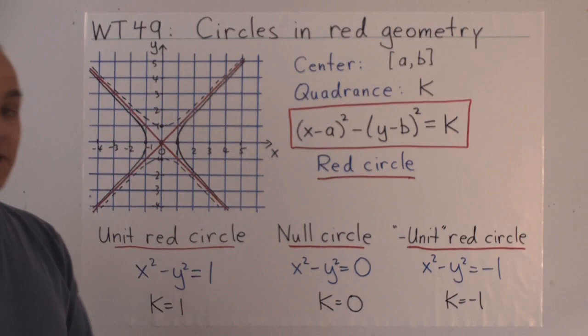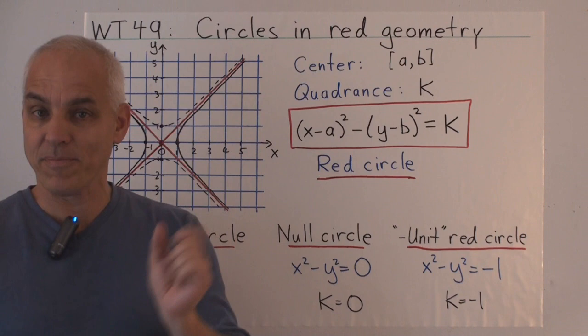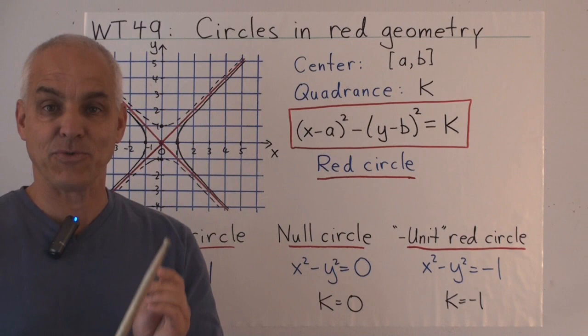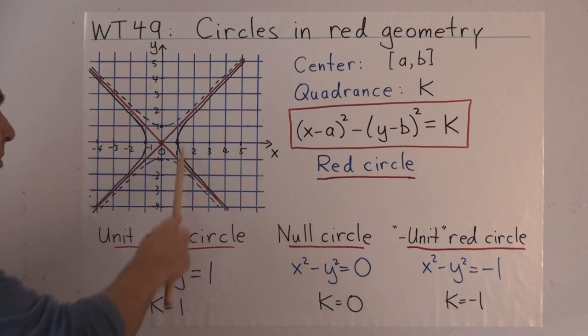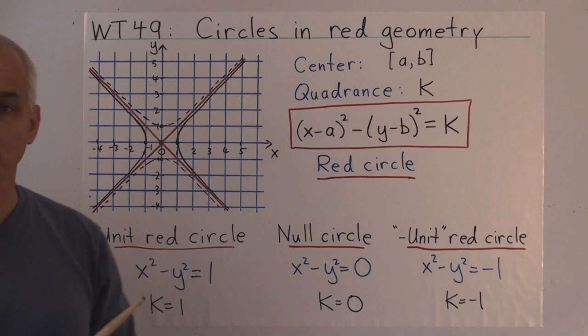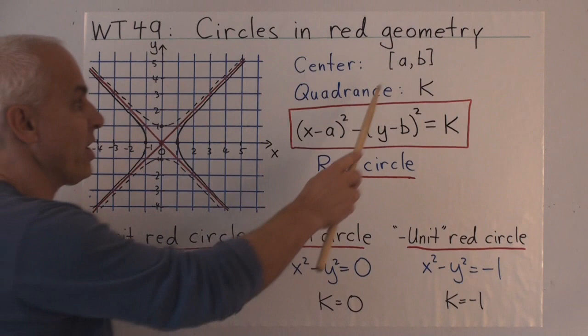Red geometry is a variant on Euclidean geometry where we introduce a new quadratic form. Instead of thinking about x squared plus y squared as the basic measurement of quadrance, we think about x squared minus y squared. That allows us to introduce a new notion of circle. A circle in this context does not look like an ordinary circle. It looks rather like what we would usually call a hyperbola. And we're going to call such a thing a red circle because it's a circle in the red geometry.